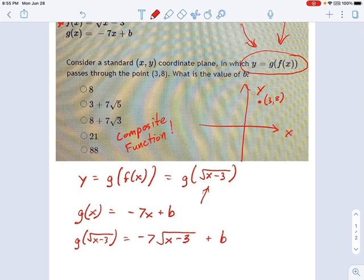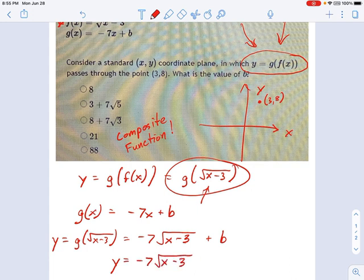So this becomes negative 7 times the square root of x minus 3. And then you have that plus b. And remember what this is. This is y. This thing right here that we're talking about. y equals that. So let's just simplify this a little bit. y equals negative 7 times the square root of x minus 3 plus b.